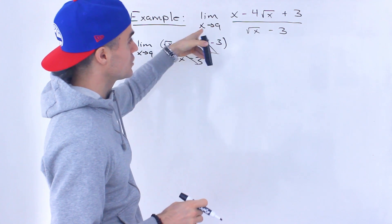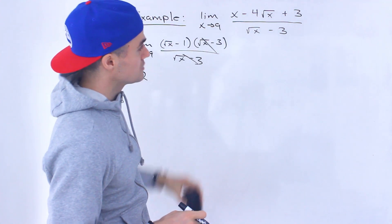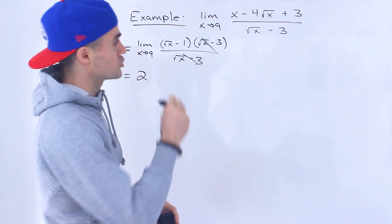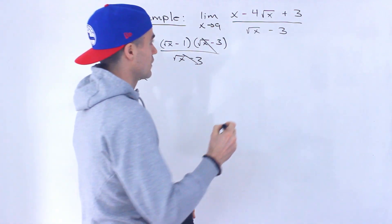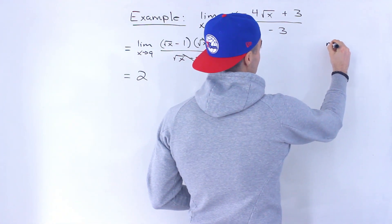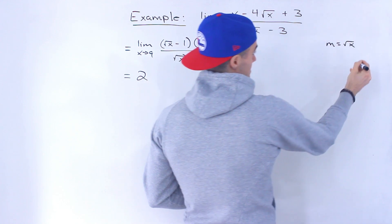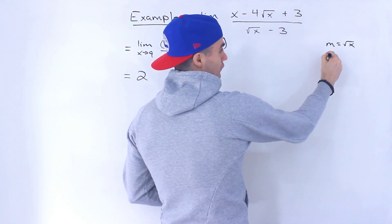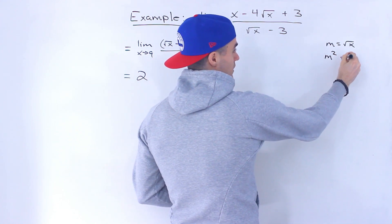But what you can do, the second way, is you could actually turn this into dealing with a quadratic in the numerator. And you can do a change of variable. So if I let m equal root x, from here we could tell if we square both sides, that means m squared equals x.